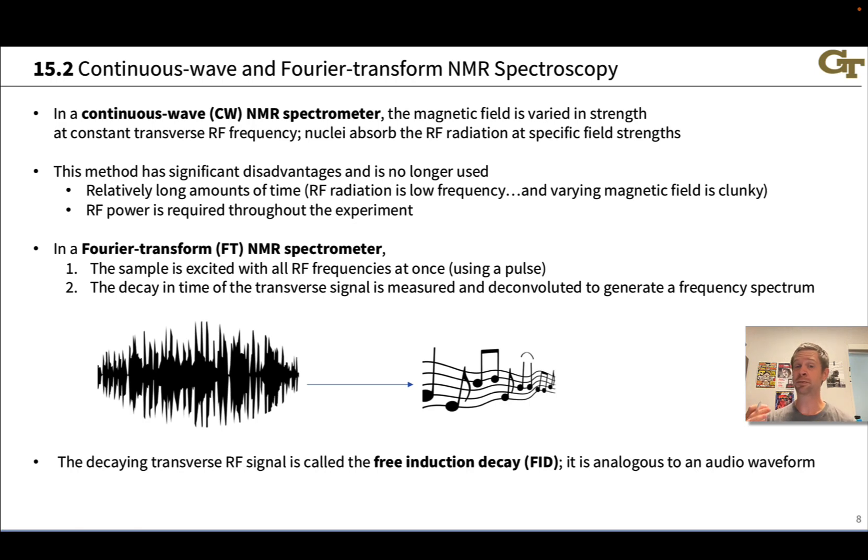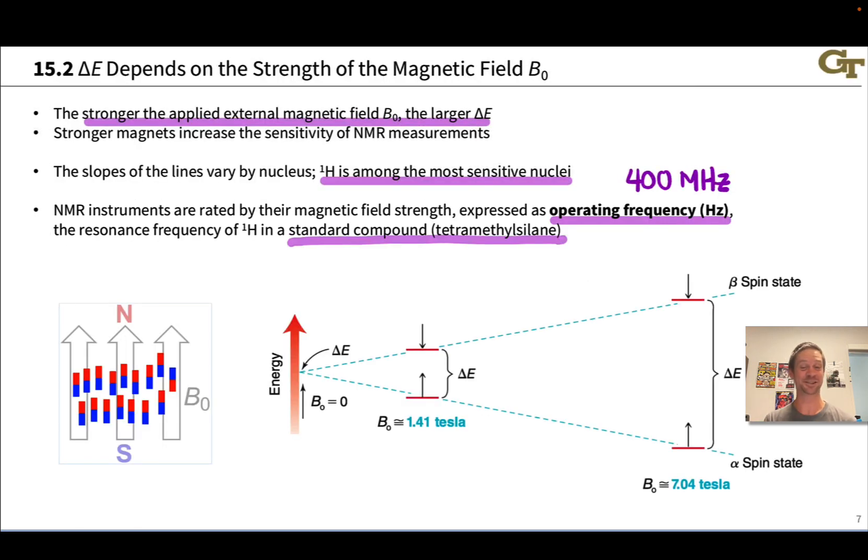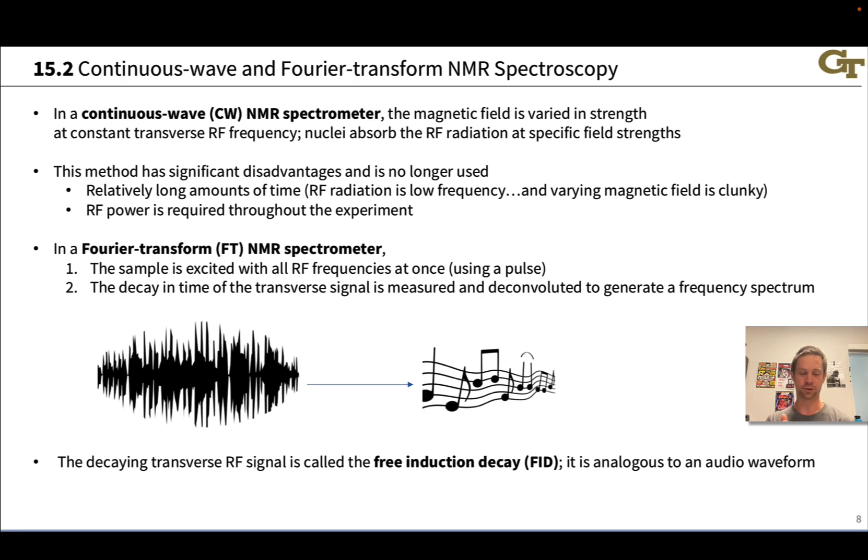Another approach involves varying the magnetic field. Going back to this slide and recognizing that as we vary the magnetic field, this gap is going to vary, and so if we can get some kind of variable magnetic source, we can change these energy gaps and look for a response as we vary the magnetic field. But that too is clunky. That was done back in the day, and that's called continuous wave or CW NMR spectrometry.